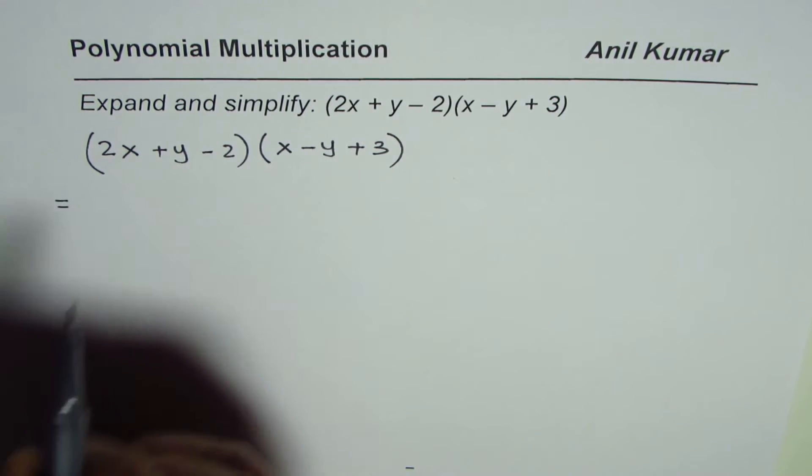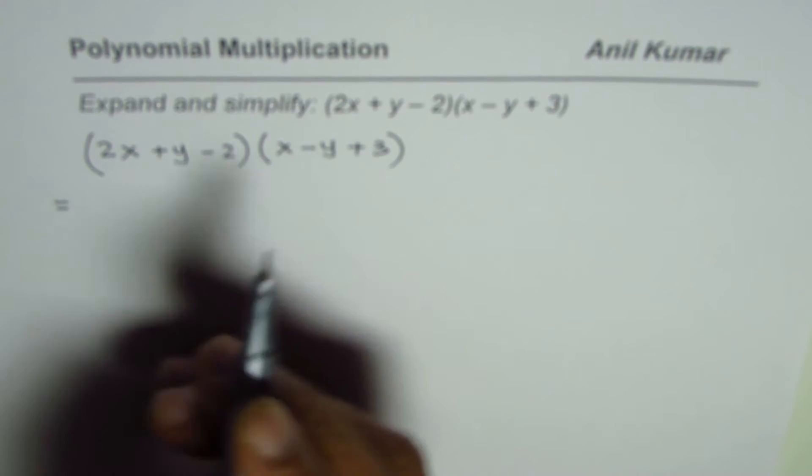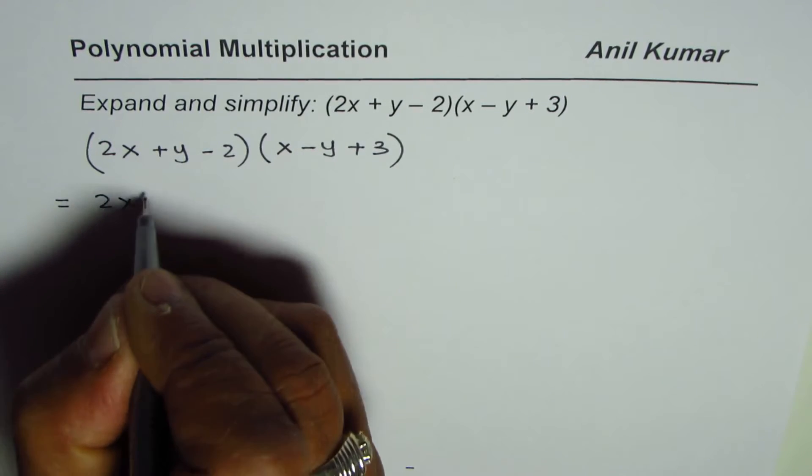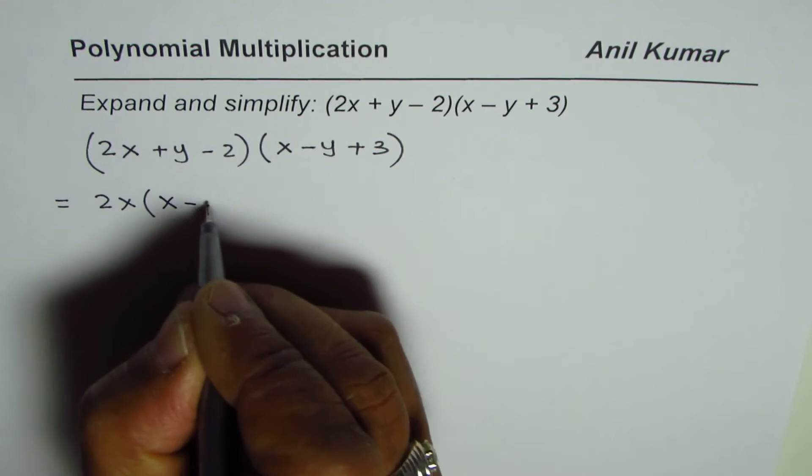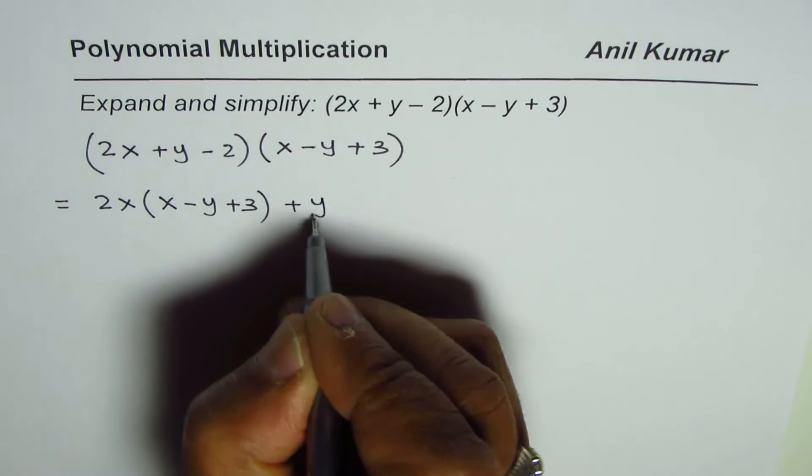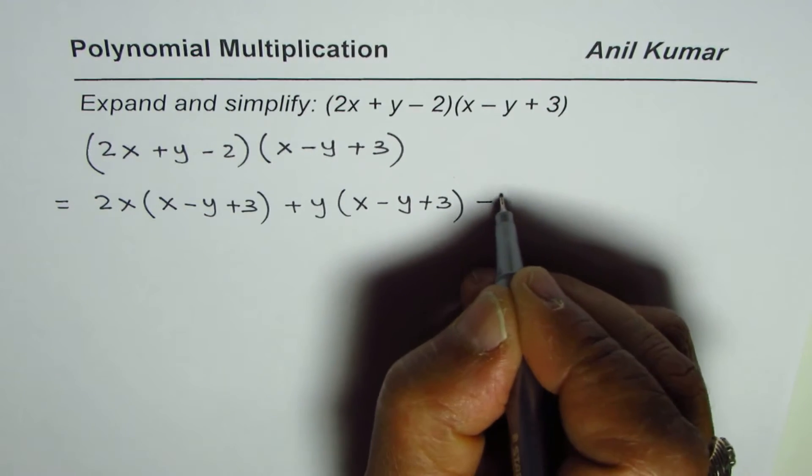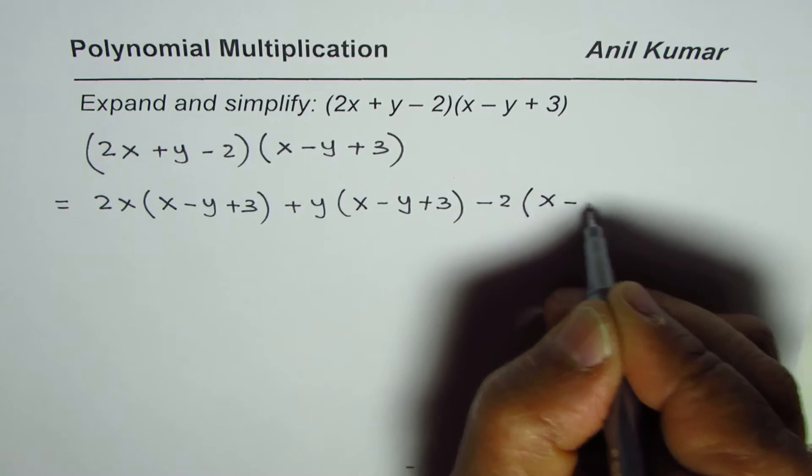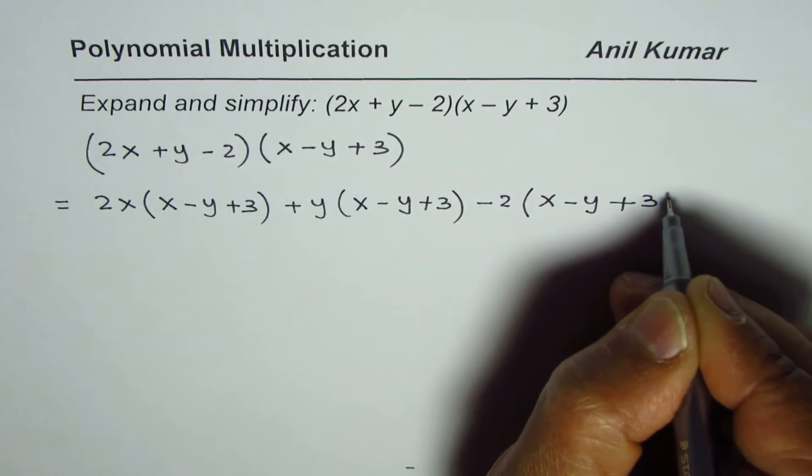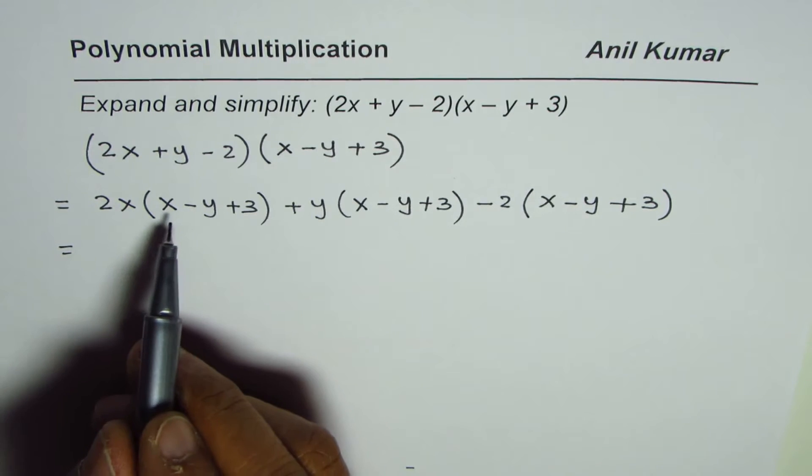The first step is where 2x multiplies all the numbers in the second trinomial. So it is 2x times (x - y + 3), and then multiply by y times (x - y + 3), and then by -2 times (x - y + 3). Now we will apply the distributive property.